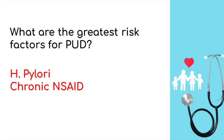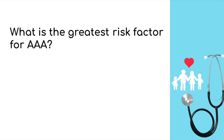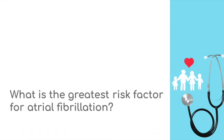What is the greatest risk factor for abdominal aortic aneurysms? Smoking. The USPSTF recommends a one-time screening for AAA with an ultrasound in men aged 65 to 75 who have ever smoked. What is the greatest risk factor for atrial fibrillation? Mitral stenosis.